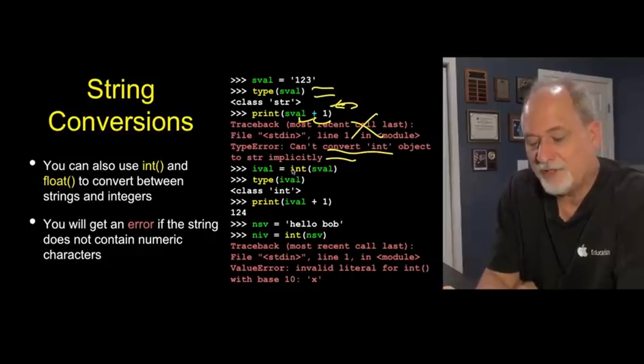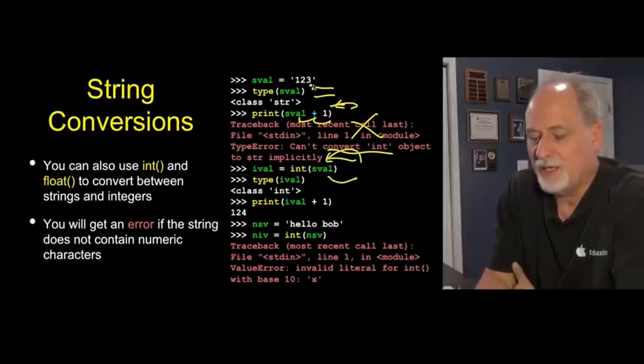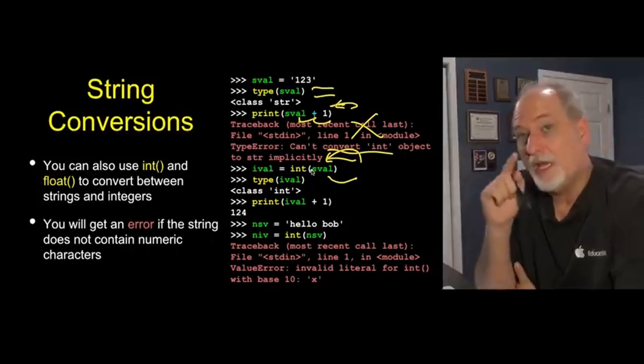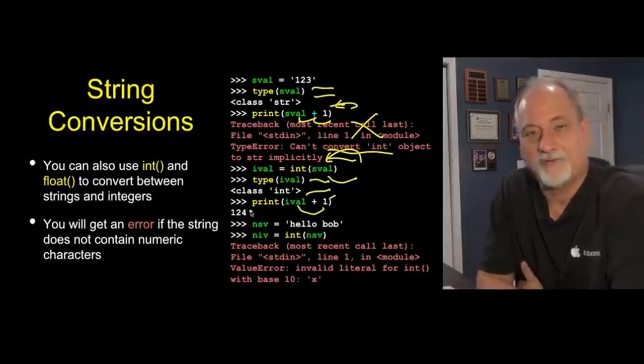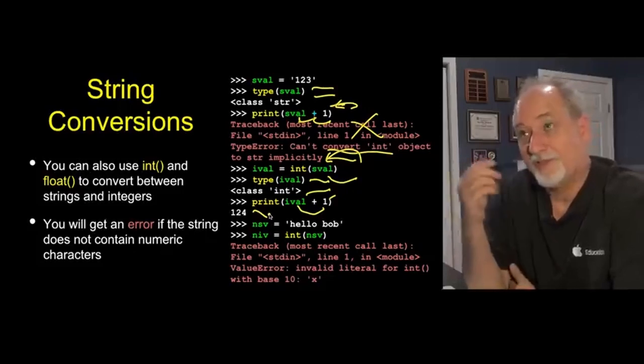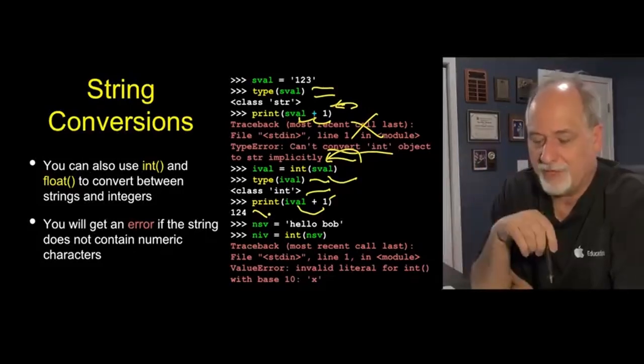But we can convert this. We can call the int function, which is like the float function, and pass a string in. So it says hey, take this and turn it into an integer. Take the input of sval, which is the string one, two, three, and give me back an integer representation of that, which is going to be 123. We say what kind of thing do we get back? Well we got back an integer. We can now add one to it and get 124. So you have to manage the type of things and you can convert from one type to another.